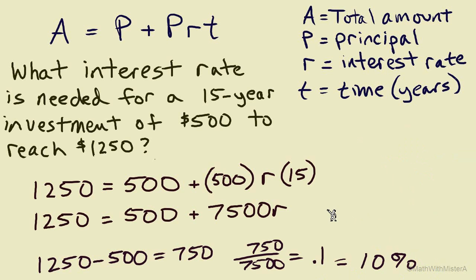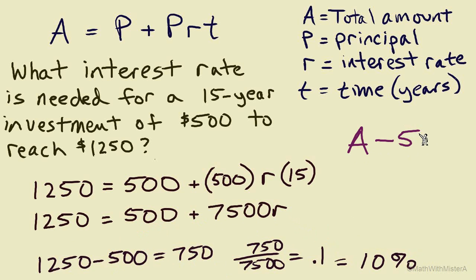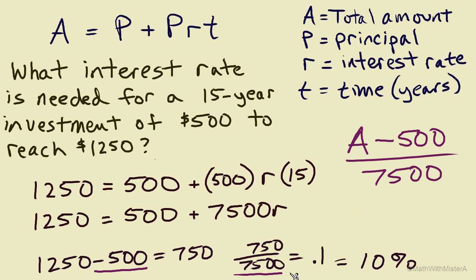Since we were solving for R, let's find the formula solved for R. We can see that R is multiplied by 7,500 and then 500 is added. The opposite steps are: from the final amount, subtract $500 and then divide by $7,500. This is the formula solved for R — it is the opposite of multiplying by 7,500 and adding 500.